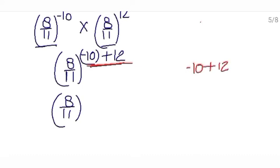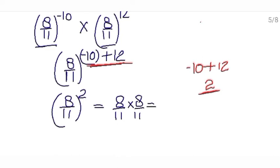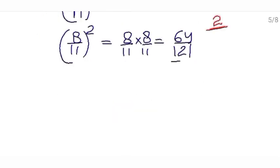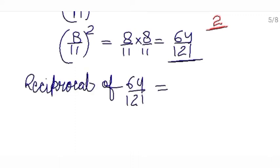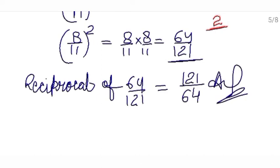Signs are different so values will be subtracted — and the sign will be of the greater numeral, that means plus 2. So here the power is 2, meaning 8 upon 11 will be multiplied by itself 2 times: 8 upon 11, so this is 64 upon 121. But this is not our answer because in the question they are asking for its reciprocal. Reciprocal of 64 upon 121 is 121 upon 64. This is your answer.